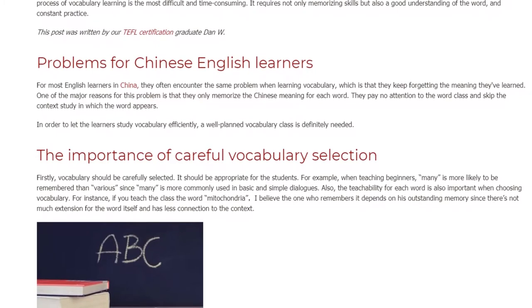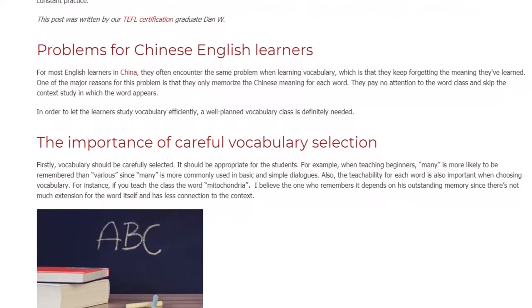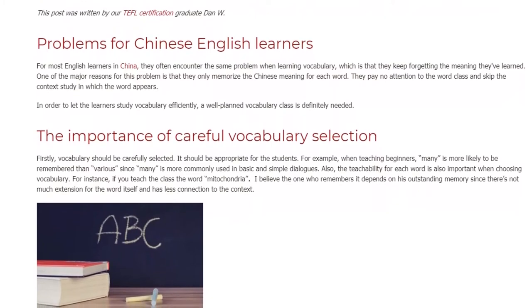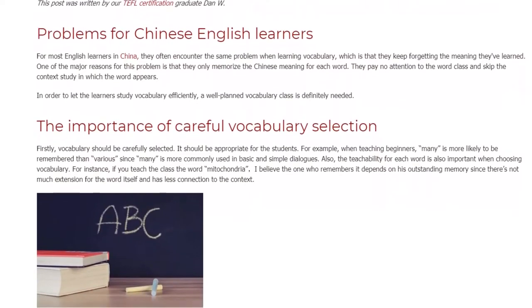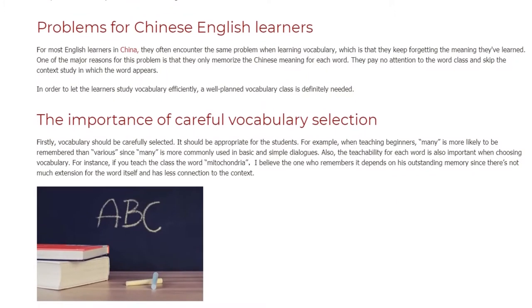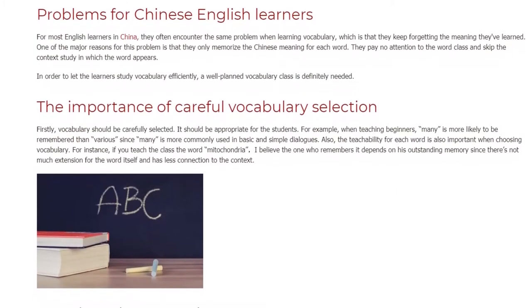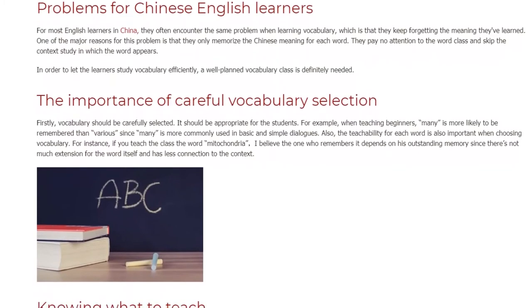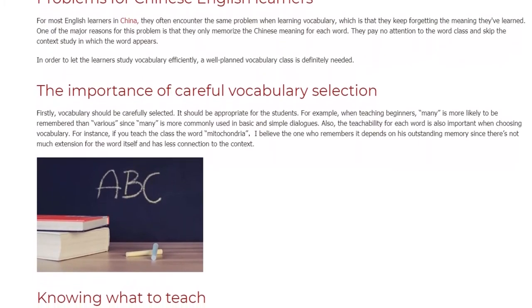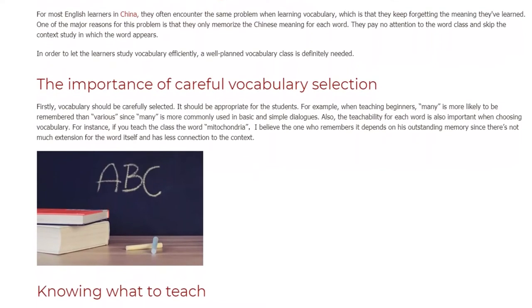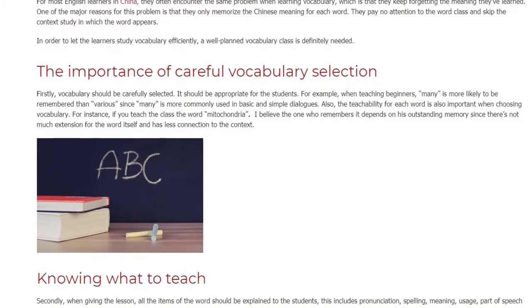Secondly, when giving the lesson, all the items of the word should be explained to the students. This includes pronunciation, spelling, meaning, usage, part of speech, and word grammar. When teaching pronunciation and spelling, phonics should be added. Phonics can help the students divide the words into syllables in order to memorize the spelling of the word more easily.